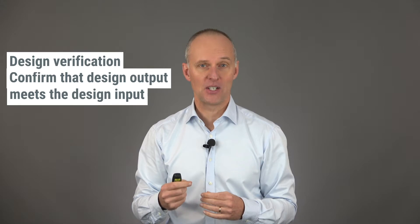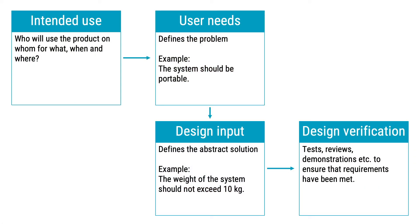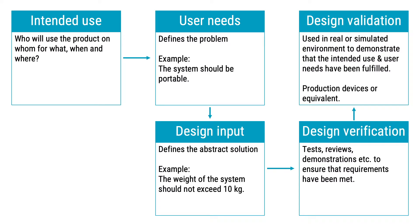In design control terminology, this is called design verification — confirming that design outputs meet design input requirements. In our example, the design input was that the device weight should not exceed 10 kilograms, and the verification could be done by putting the device on a calibrated scale and weighing it. You may use many different methods for verification, and which methods you use are in most cases up to you to decide. When you have verified the product meets technical requirements, you also have to check it meets the intended use and user needs — because a product may be 100% technically correct but still useless in a real setting.